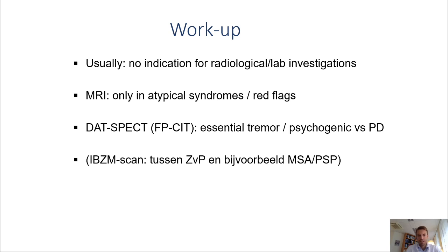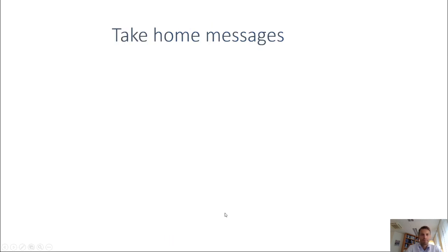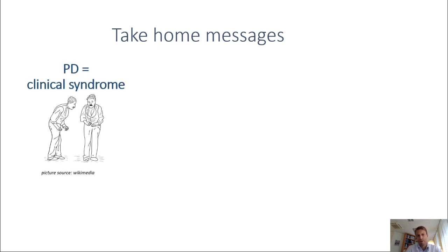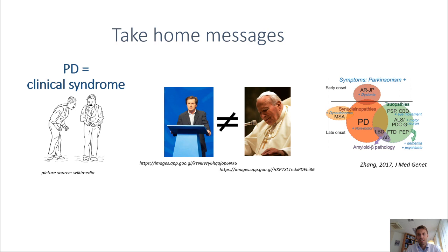IBZM-SPECT scans are not really useful but are sometimes used for differential diagnosis between MSA, PSP, and Parkinson's disease. This is an abnormal DAT-SPECT scan showing nigrostriatal degeneration. So what can we learn from this? Three take-home messages: PD is a clinical syndrome of motor symptoms but also many non-motor symptoms that can affect patients early on in the disease. It's a spectrum even within Parkinson's disease — one patient can be very different from another, which affects treatment. And there's also a spectrum beyond Parkinson's disease of Parkinsonisms that differ in their clinical phenotype but also in what goes wrong protein-wise in the brain.